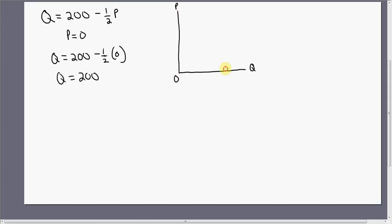P is 0, Q is 200. This is where Q is 200, right about here. That's one point on the demand curve. Let's get the vertical intercept. To get the vertical intercept, we're going to set Q equal to 0.